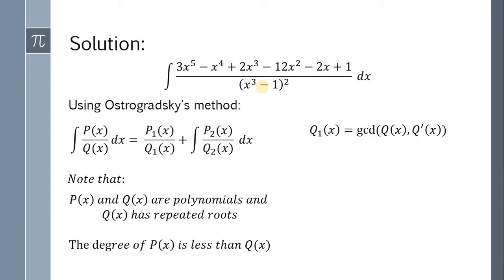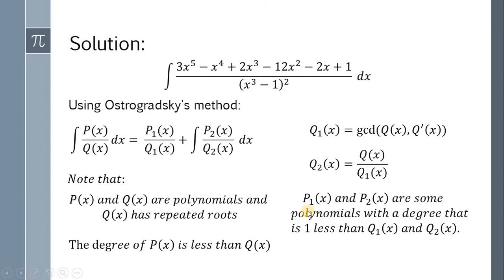Next, Q sub 1 of x is equal to the GCD of Q of x and the derivative of Q of x. Q sub 2 of x is equal to Q of x all over Q sub 1 of x. Also, P sub 1 of x and P sub 2 of x are some polynomials with a degree that is 1 less than the degree of Q sub 1 of x and Q sub 2 of x. And solving the numerical coefficients of P sub 1 of x and P sub 2 of x involves partial fraction decomposition.